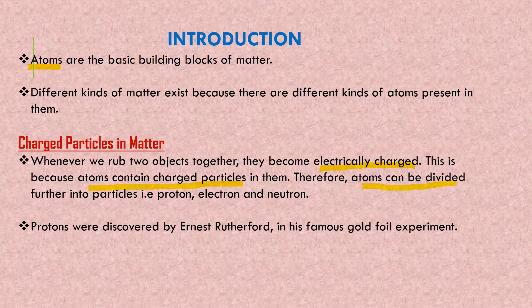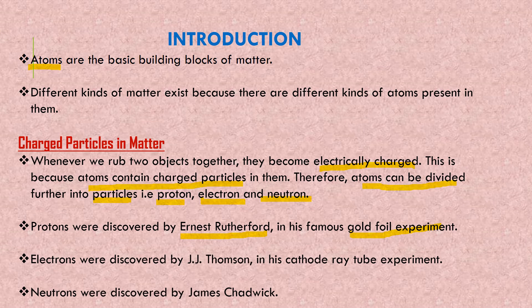Therefore, atoms can be divided into further particles: protons, electrons, and neutrons. This shows that atoms can be further divided into smaller particles. Protons were discovered by Ernest Rutherford in his famous gold foil experiment. Then electrons were discovered by J.J. Thomson in cathode ray tube experiment, and neutrons were discovered by James Chadwick.